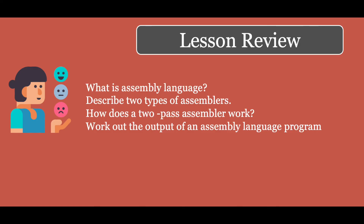That's the end of the lesson for today. Hopefully by the end of this session you know what assembly language is, you should be able to describe the two different types of assemblers — the one-pass assembler and the two-pass assembler — and for the two-pass assembler you should be able to explain how it actually works. You should also know what an assembly language program looks like, how to create simple ones, and be able to work out the output of an assembly language program. Do go through the module if there's anything you don't understand — get back to me, bye for now.